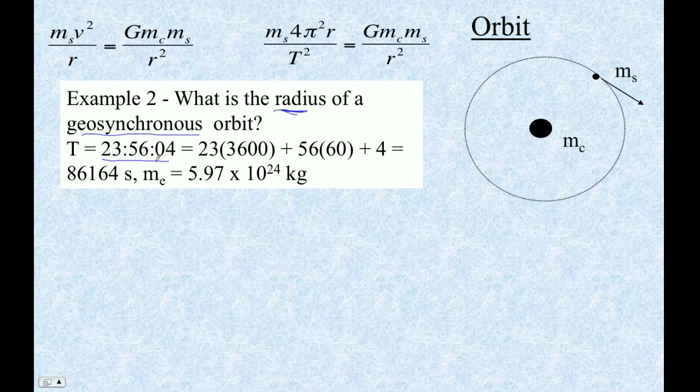And the reason that that's not the 24 hours that you expect is, and I'll show you this in class, is that as the Earth rotates, it also orbits the Sun and moves a little bit in its path, and so it actually takes a little bit less time to rotate with respect to the stars than it does with respect to the Sun. So the period of this thing is 86,164 seconds is the actual time it takes the Earth to rotate with respect to the stars.